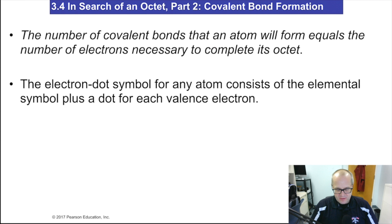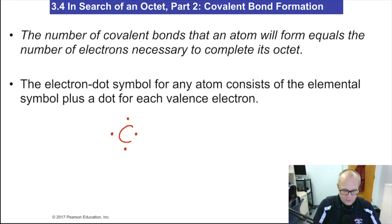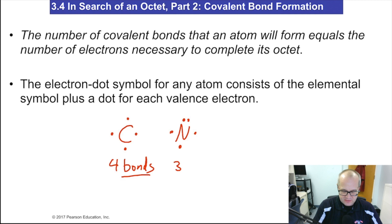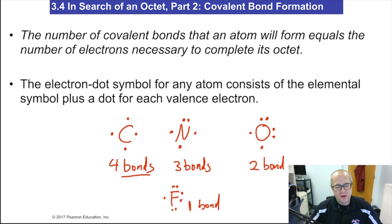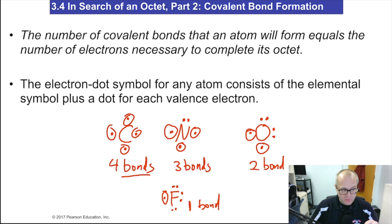The number of covalent bonds that an atom will form equals the number of electrons necessary to complete an octet. So if we had carbon, carbon will form four bonds because it needs four electrons to complete its octet. Nitrogen will form three bonds because it needs three electrons to complete its octet. Oxygen needs two bonds to complete the octet, and fluorine needs one bond to complete the octet. All these atoms want to form bonds to complete their octet, so look for single electrons — that's how many bonds a nonmetal wants to make to complete the octet.